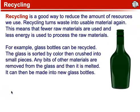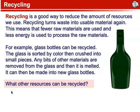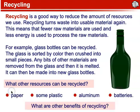For example, glass bottles can be recycled. The glass is sorted by color, then crushed into small pieces. Any bits of other materials are removed from the glass, and then it is melted and made into new glass bottles. What other resources can be recycled? Paper, some plastic, aluminum, and batteries, just to name a few. Recycling also prevents potentially useful materials from ending up in landfills, limiting the space needed for landfills and reducing the amount of raw material that needs to be gathered from the environment.